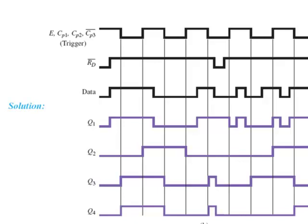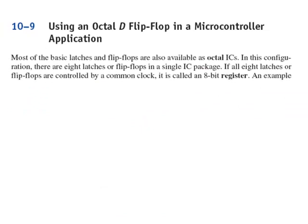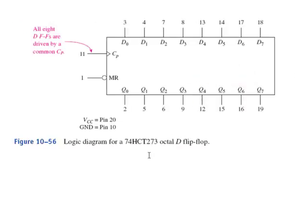But right now, I want to talk to you about Section 10-9, which discusses the Octal D flip-flop used in a microcontroller application. And so quite often in microprocessors, microcontrollers, they'll use octal devices, meaning eight possible, in this case, D flip-flops all in one single package. This is going to be used to form an 8-bit register. So a commonly used Octal D flip-flop is the HCT273. And all eight D flip-flops are going to be driven by a common clock.